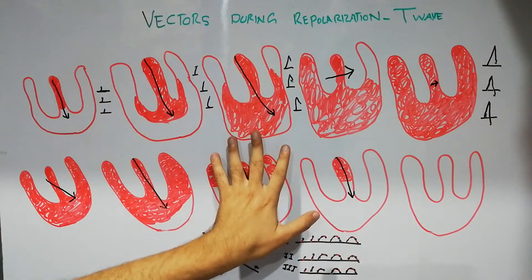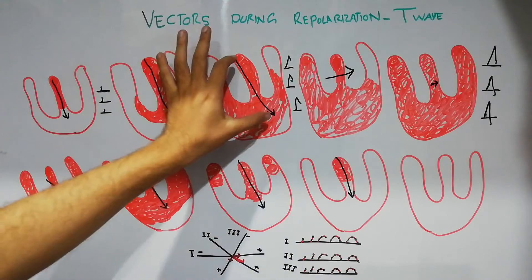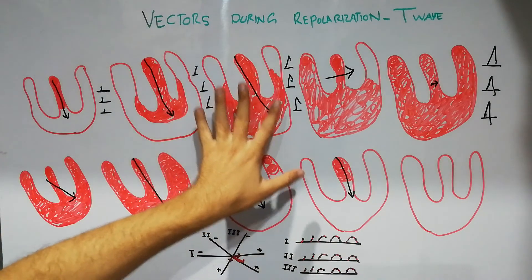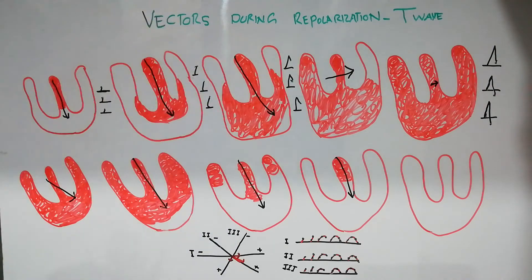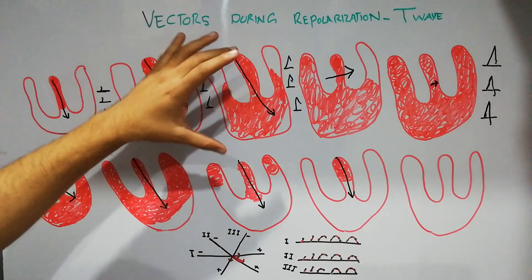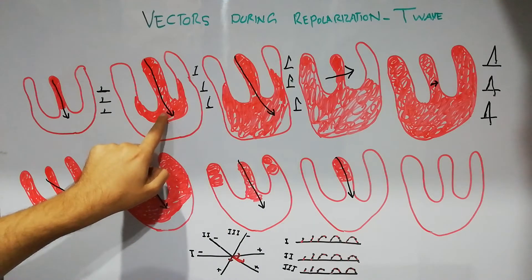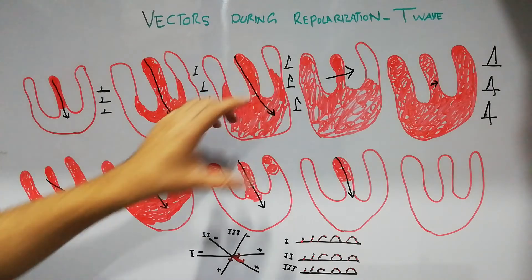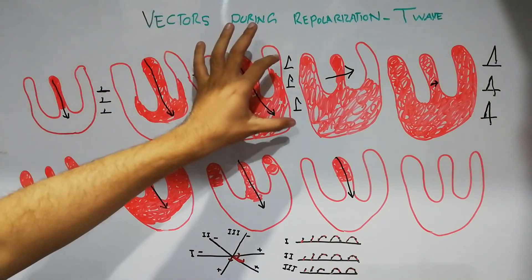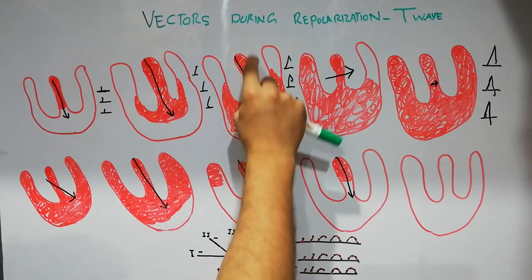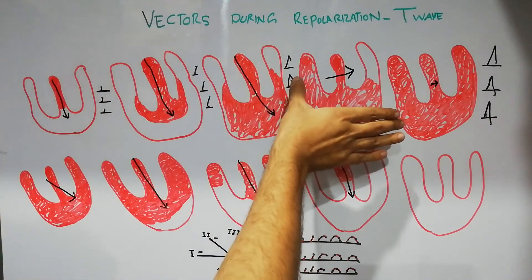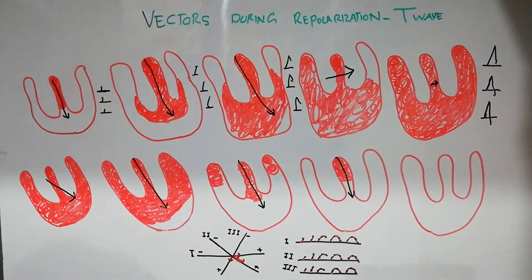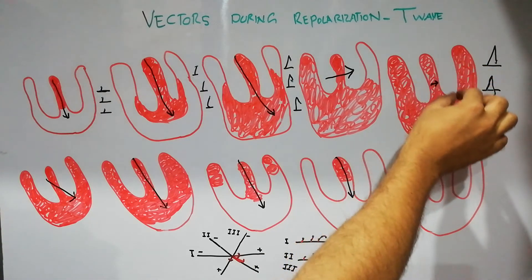Then depolarization has spread to the whole endocardium and the vector has achieved its maximum strength. Now it has started going toward the base of the heart. At this point the vector has slightly turned toward the left side — initially it was on the right side — which has also led to a small decrease in its size. When depolarization has reached the base and the whole of the ventricles have been depolarized, the vector has reached the zero point again.